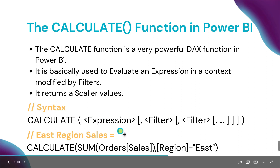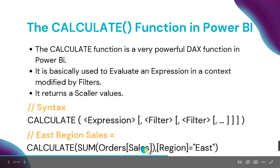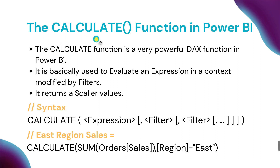Here you can see the syntax of CALCULATE: write the keyword CALCULATE, then inside the bracket pass two things — an expression and a filter. You can apply multiple filters if needed. For example, suppose we have a table called Orders with a column called Sales. To calculate total sales where Region equals East, you write CALCULATE(SUM(Orders[Sales]), Orders[Region] = "East").